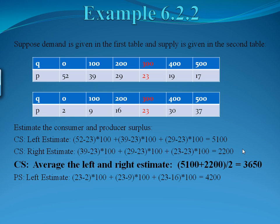We do something similar for producer surplus. Remember, producer surplus is the equilibrium price minus what we get on the supply function. When we do our left-hand estimate using the supply table, for the first 100 units we pick the price on the left and do equilibrium price minus supply price, since the equilibrium price is the curve on top. So 23 minus 2, then multiply by 100 units. From Q equals 100 to 200, we pick the price on the left, which is 9, so we do 23 minus 9 times 100 units. From 200 to 300, we pick the price on the left, 16, so we do 23 minus 16 times 100 units. Adding those all together gives us a left-hand estimate of 4,200.